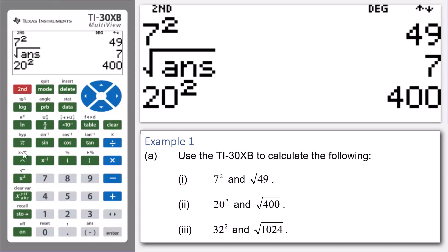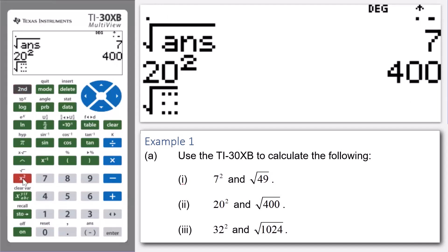Now we press 2nd X squared, and then press 2nd and then the negative sign key. So now we're calculating the square root of 400. We press enter and we're back to where we started from. The square root of 400 is equal to 20.